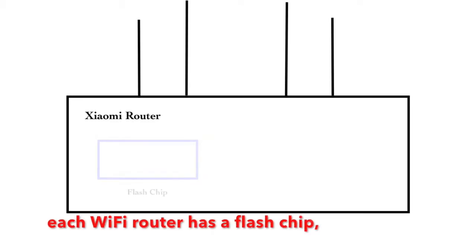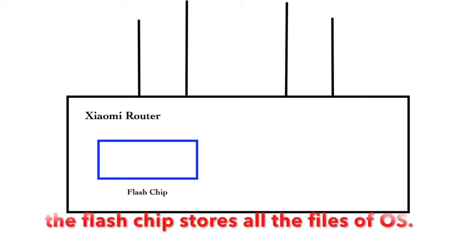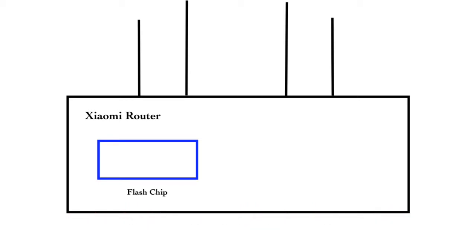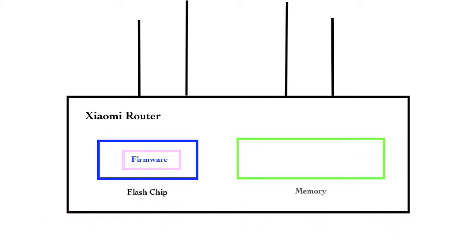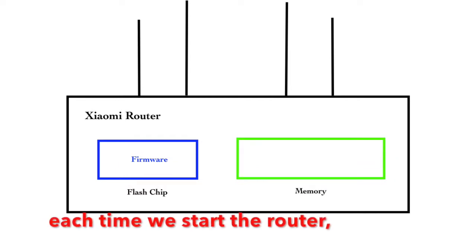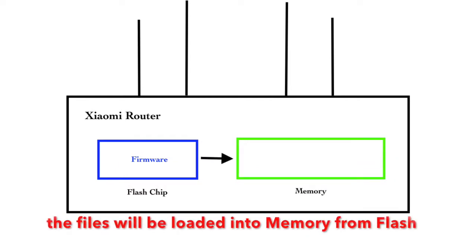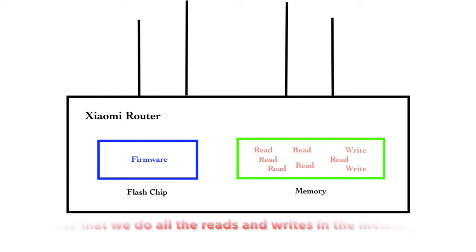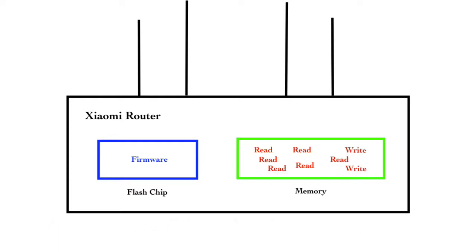Each Wi-Fi router has a flash chip. The flash chip stores all the files of the operating system. When installing firmware, we write the image into the flash. Each time we start the router, the operating system will be loaded into memory from flash. After that, we do all the reads and writes in memory.